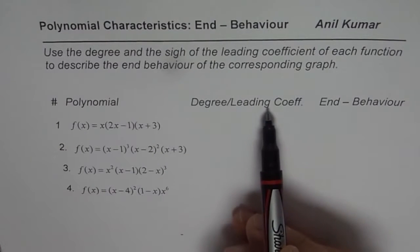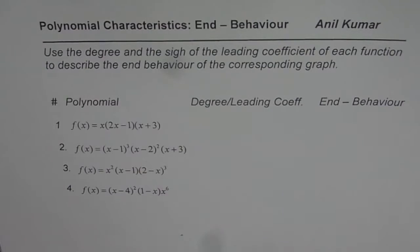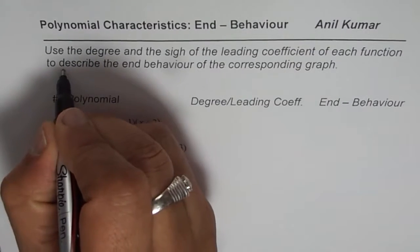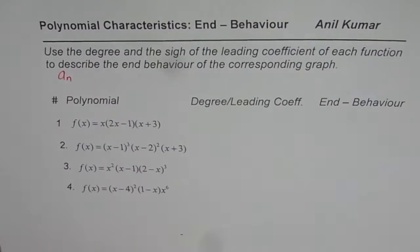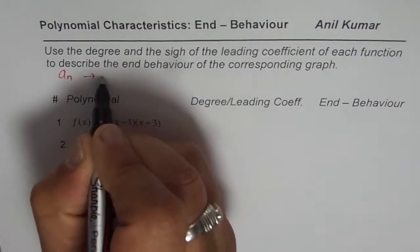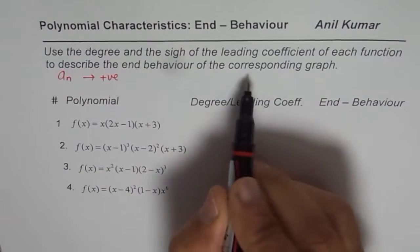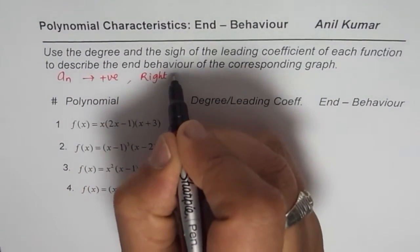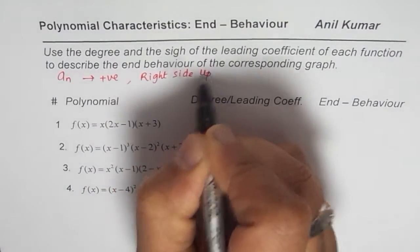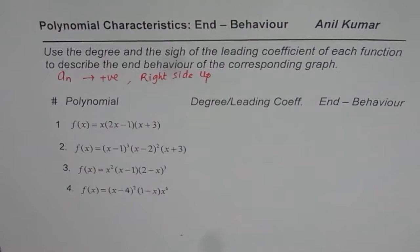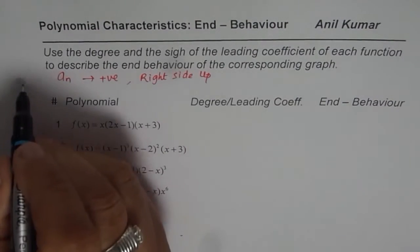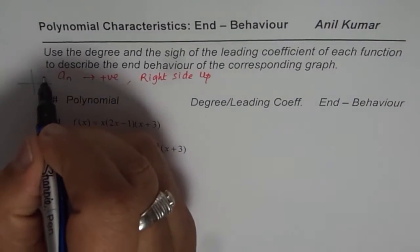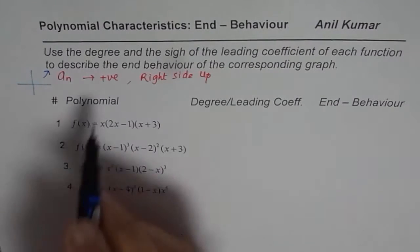How are degree and leading coefficient related to end behavior? If the leading coefficient — called a sub n — is positive, then the character of the graph is right side up. That means the graph of the polynomial function will move in this fashion: right side up.